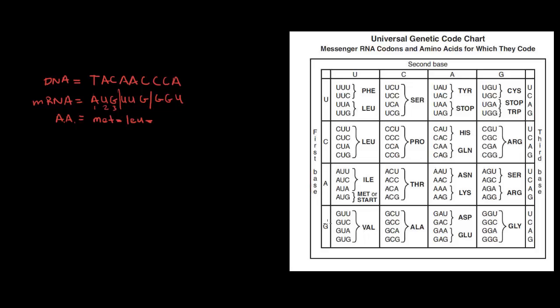GGU. Well, the first base is G. It's down here. It's in that row. Second base is also G. That means here. So we're going to have to trace it down this column, this row. We are in this box right here. And you can find GGU. And remember the U tells you the last letter over here on the right. Here it is GGU. That is glycine, or GLY.